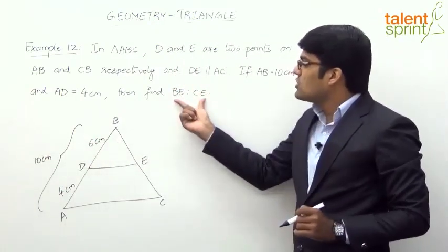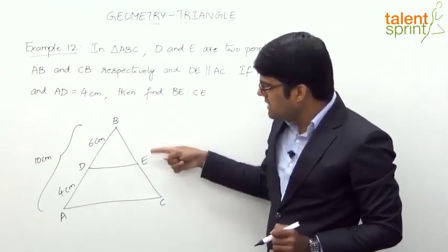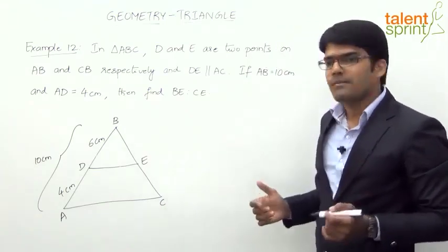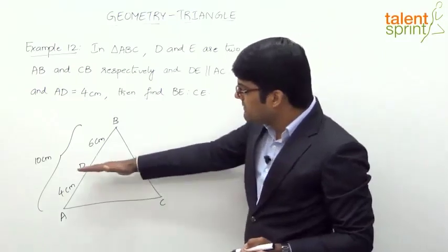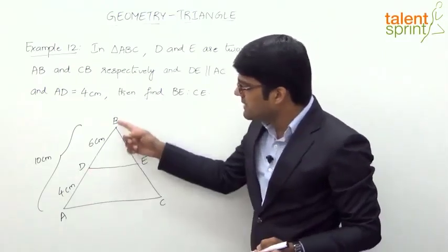Now we need to find out the ratio between BE and CE. BE is to CE is equal to what? Now as per the basic proportionality theorem, we know that if DE is parallel to AC,